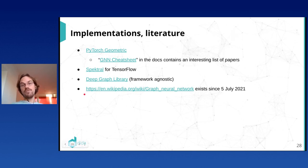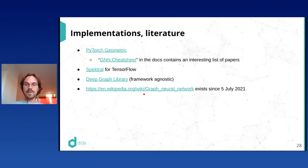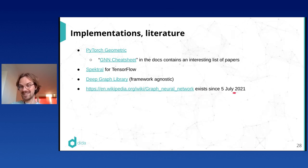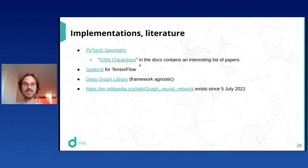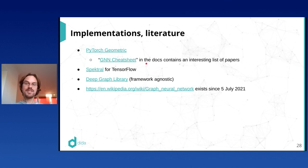The Wikipedia page for graph neural networks has only existed since early this month. One suggestion: go to the documentation of any of these packages — I particularly like PyTorch Geometric — which lists papers for which they provide implementations. Going to those papers would be a good place to delve deeper into the topic. Thank you.